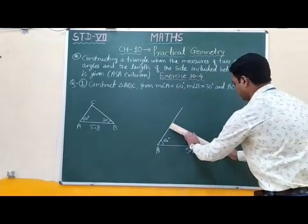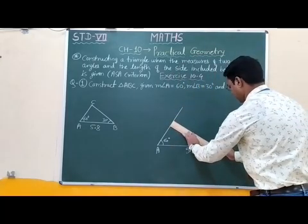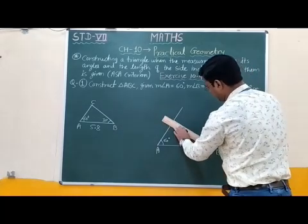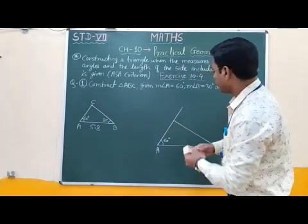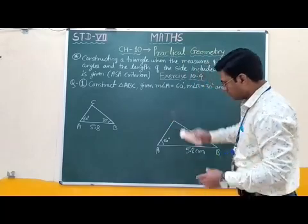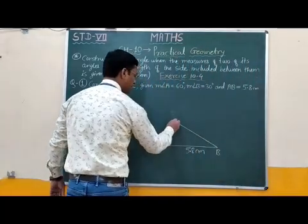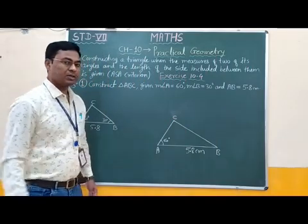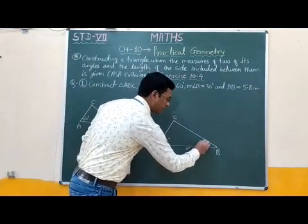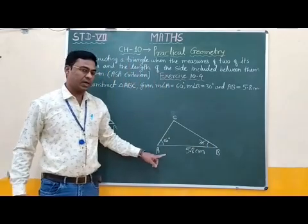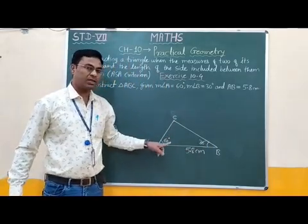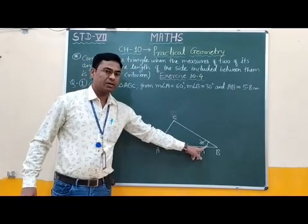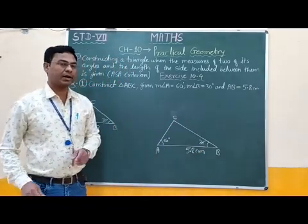If you join these two points, we get the 30 degree angle. Now we have to erase the external line segment. Here this point is C. This angle is 30 degrees. Therefore, students, here is triangle ABC. In this triangle, side AB is 5.8 cm, angle A is 60 degrees, and angle B is 30 degrees. This is the required triangle.